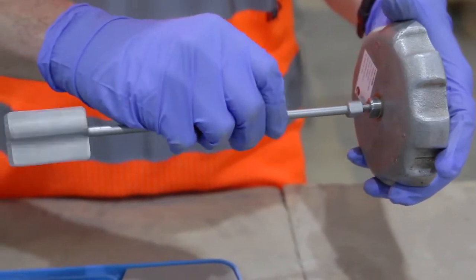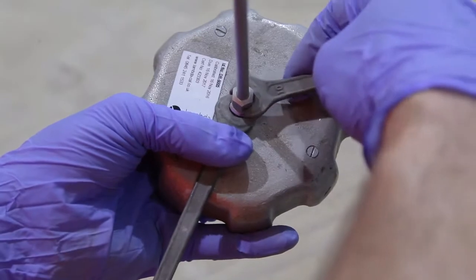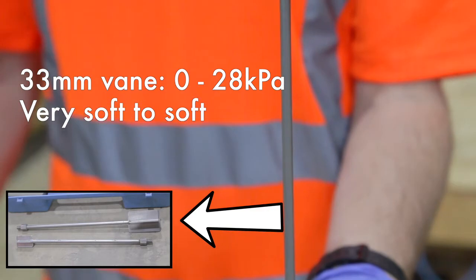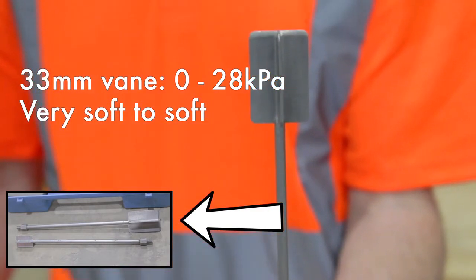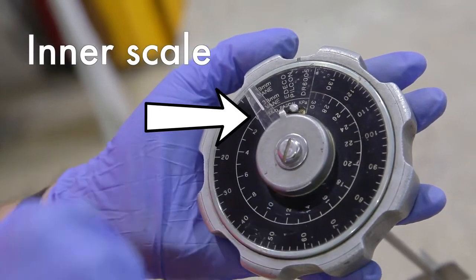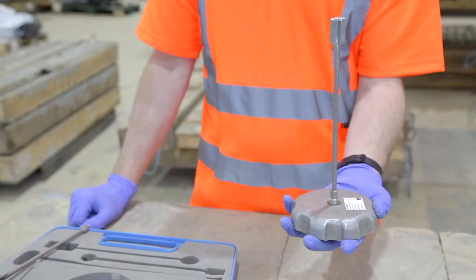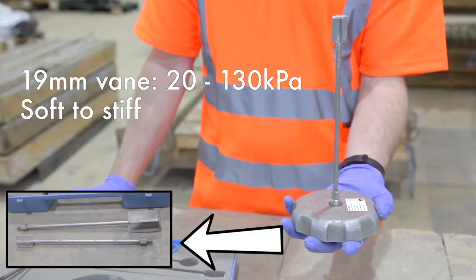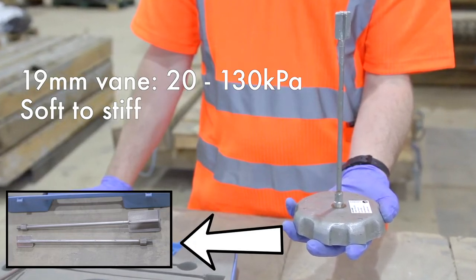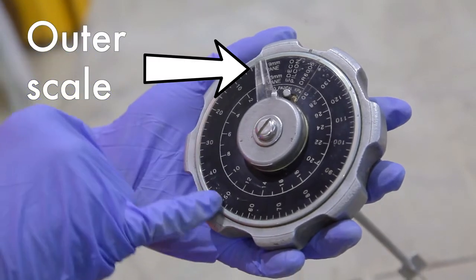Attach the required vane spindle using the spanners provided. The larger 33mm vane is suitable for soils of very soft to soft consistency. If using, then read the inner scale on the dial. The smaller 19mm vane is suitable for soils of soft to stiff consistency. Read the outer scale on the dial.